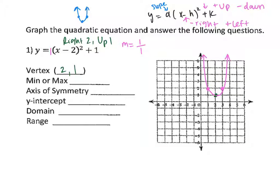Looking at this graph, the vertex looks like a minimum because it's the lowest point. The axis of symmetry is when you cut this U in half — which x value does it hit? We cut the U in half and notice it hits at x equals 2. Make sure you write x equals 2, not just 2, because that vertical line represents an equation.